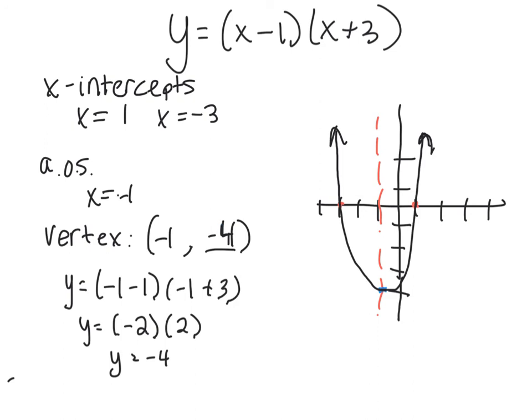Now the last thing we didn't talk about was the a value. Notice in this problem that my a value that's listed there is actually 1. Meaning a is positive. And so my graph should be facing right side up. And since it does that I know I've graphed it correctly. Hopefully this helps. And we will talk again soon. Thank you.